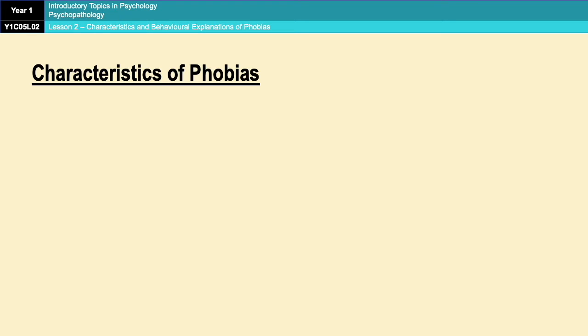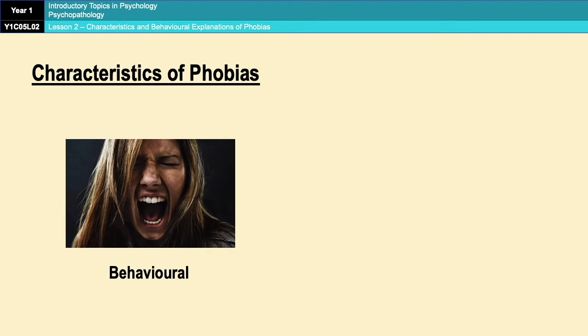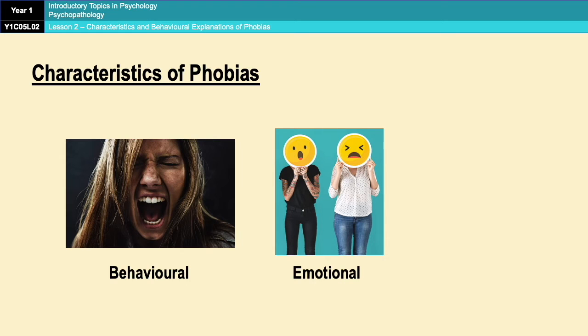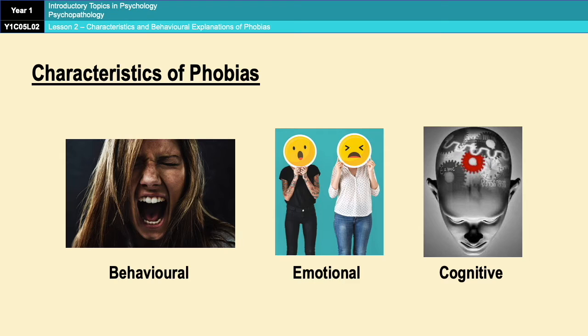The next thing you need to know about is the characteristics of phobias. For every mental health condition you come across in A-level psychology, there are three categories of characteristics — whether that's phobias, depression, or OCD. The first category is behavioural characteristics, which is all about actions. Then you've got emotional characteristics, which is all about feelings. And finally, cognitive characteristics, which is all about thoughts and interpretations.